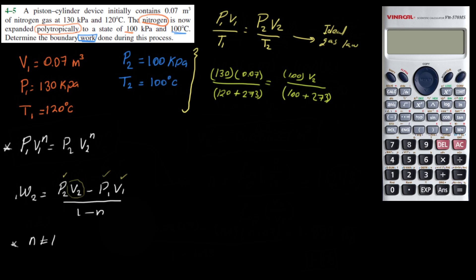So here, divided by this number, multiplied by 373, divided by 100, and that's what we get, 0.08636, 0.08636, a meter cubed, that's V2.